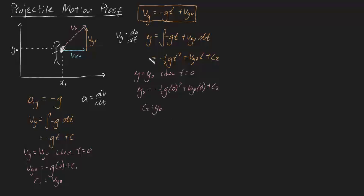Substitute this back into this equation, and we're left with y is going to be equal to minus a half gt squared plus vy0t plus y0. This is our equation describing our vertical position of our ball at any time t.